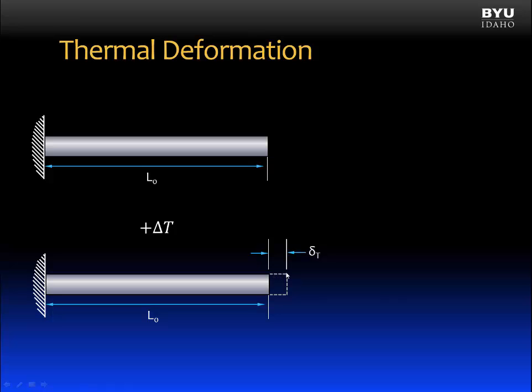And the length change is a deflection. We'll call it a thermal deformation, or a thermal deflection. We'll give it a symbol of δ_T, where T stands for thermal. And we can calculate the value of the thermal deflection. It is equal to α times ΔT times L-naught. ΔT is the change in temperature. L-naught is the original length. α is the coefficient of thermal expansion.